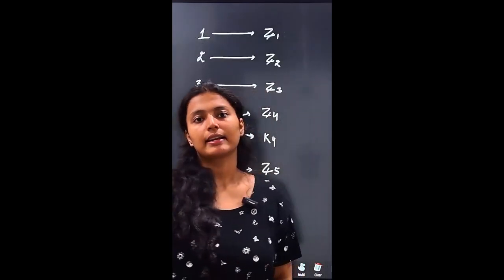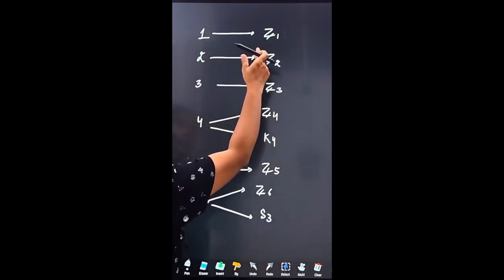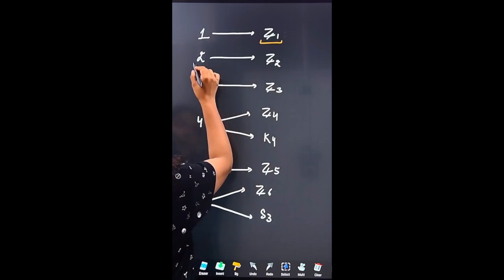This will help you with classification of groups as per their order. Now, order one groups are only Z1 type. If they are cyclic, they will be abelian.